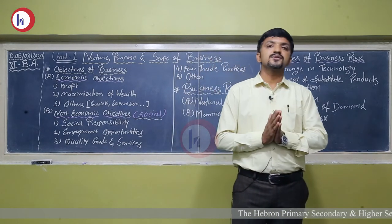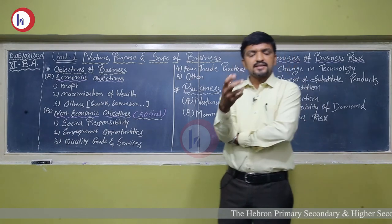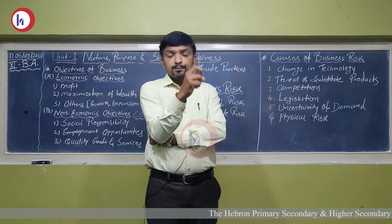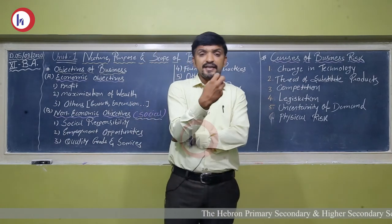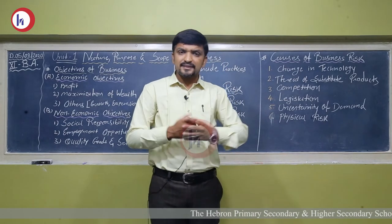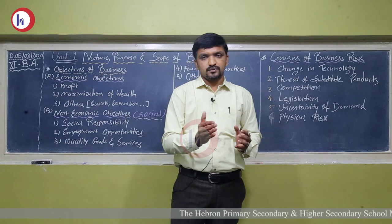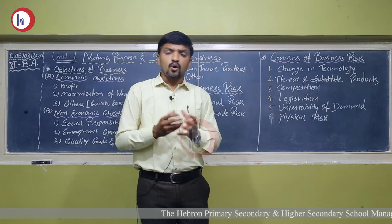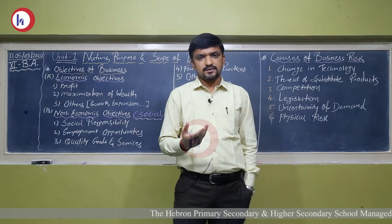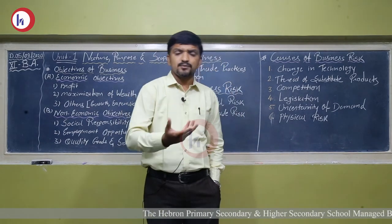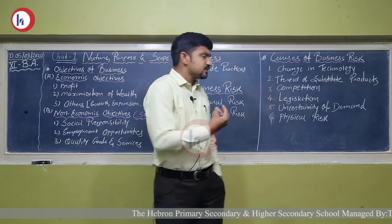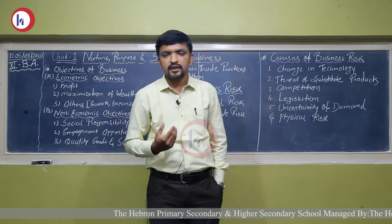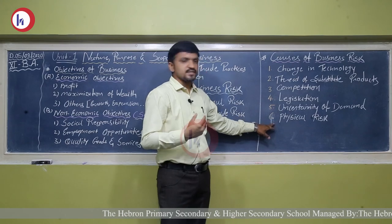Number six is physical risk, which means loss or damage to property, breakdown of any asset or machine, or goods getting damaged during transportation in transit. Physical risk can also occur due to certain activities at the business premises or for some natural reason causing machines or assets to be damaged.